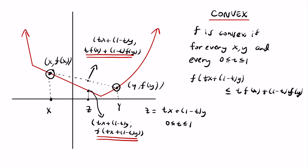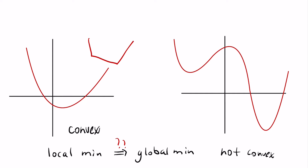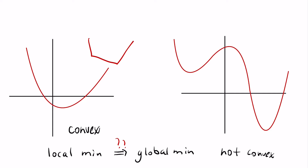To return to the intuition: if t = 1/2, we are saying that f at the midpoint (1/2)x + (1/2)y is less than or equal to (1/2)f(x) + (1/2)f(y), which is the y-coordinate of the midpoint of the line segment. Now let's use this working definition of convexity to see why local minima for convex functions are forced to be global minima.